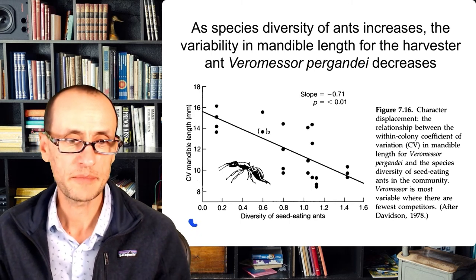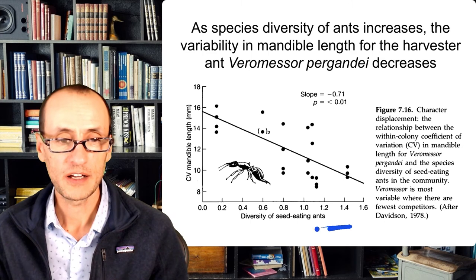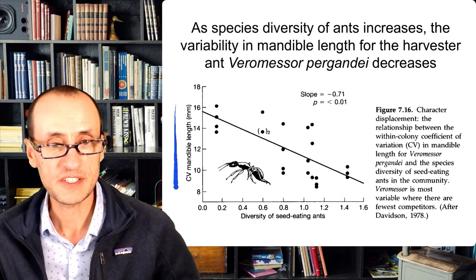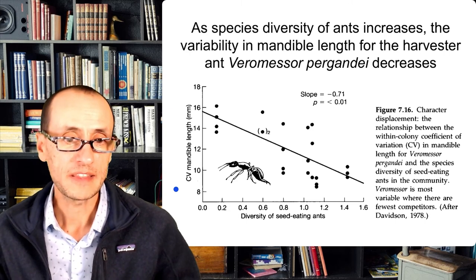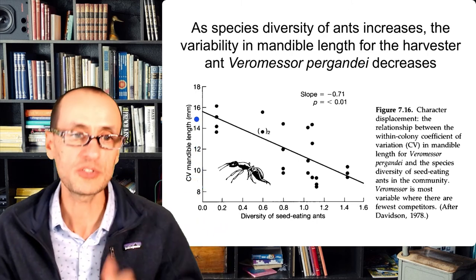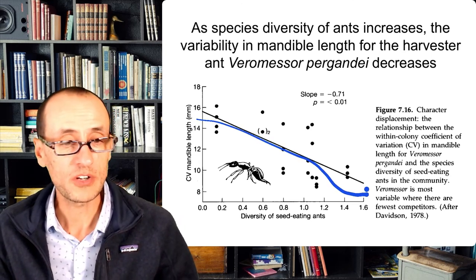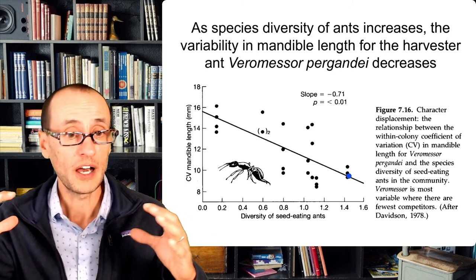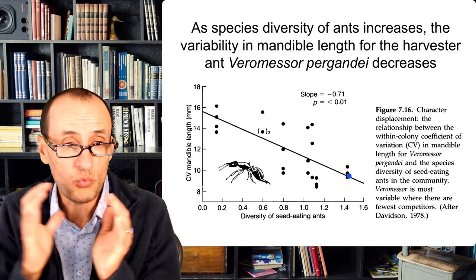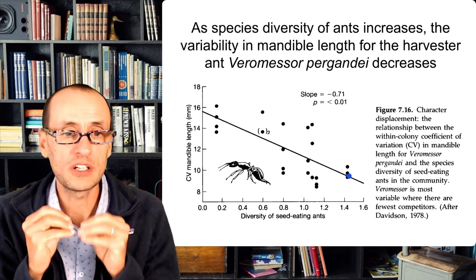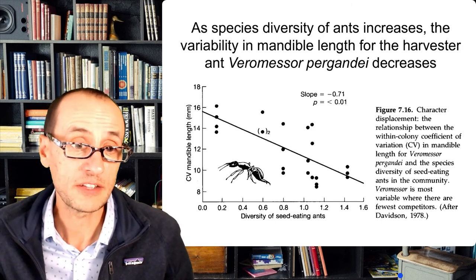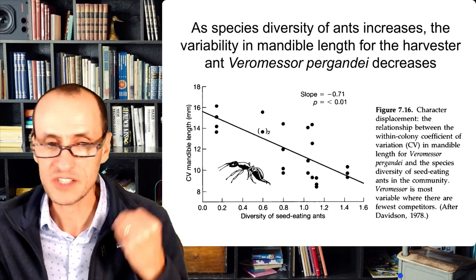Similar relationships have been seen in other groups, including ants. In a study by Davidson, as the diversity of seed-feeding ants increases along the x-axis, mandible width tends to have a narrower range — less diverse within a species. Mandible length is a relevant character because it determines what kinds of seeds an ant can grab and bring back to the nest. When there are more species, the range of mandible widths is narrower, perhaps indicating character displacement as species specialize on a subset of seeds, reducing competition.